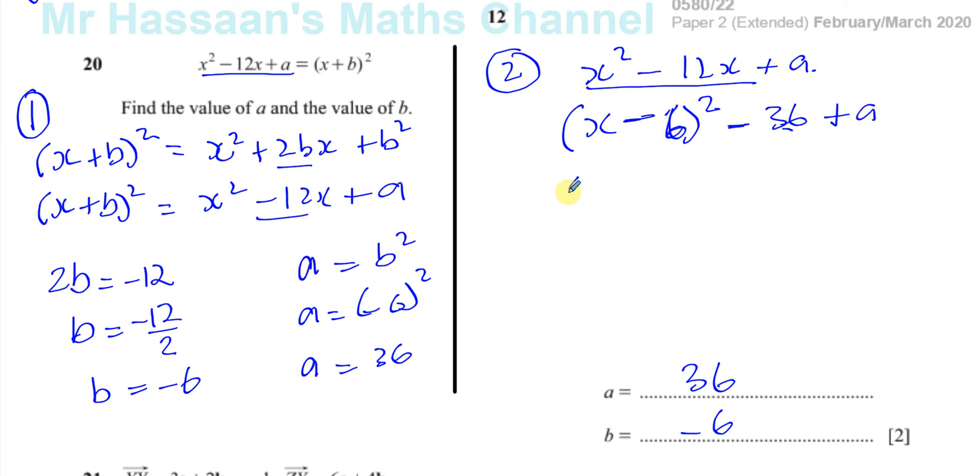So x minus 6 squared minus 36, and then at the end there's a plus a. So if we compare it to what we have, we have x plus b squared, and you've got plus 0 basically. We can see here that the b and the minus 6 are the same, and we can see here that the minus 36 plus a must be equal to 0, so you've got minus 36 plus a equals 0, so a is equal to 36.